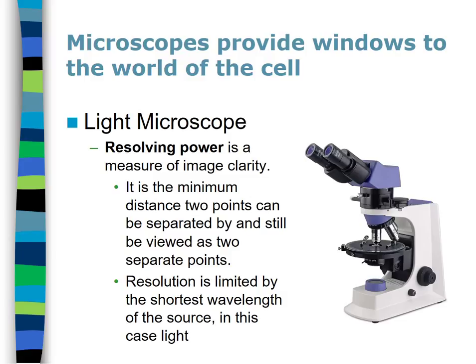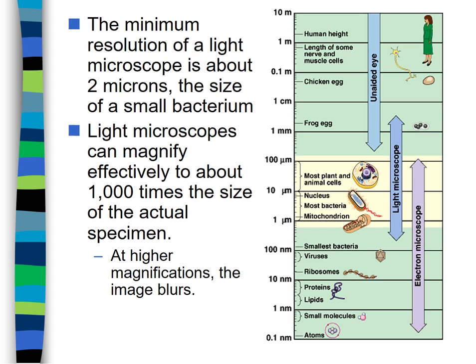With a light microscope we can resolve down to about two microns — two millionths of a meter. A good light microscope can magnify up to about 1,000 times; the ones in our classroom magnify maybe 100 to 400 times. With the unaided eye you can see down to about 100 microns; with a light microscope, down to almost one micron.